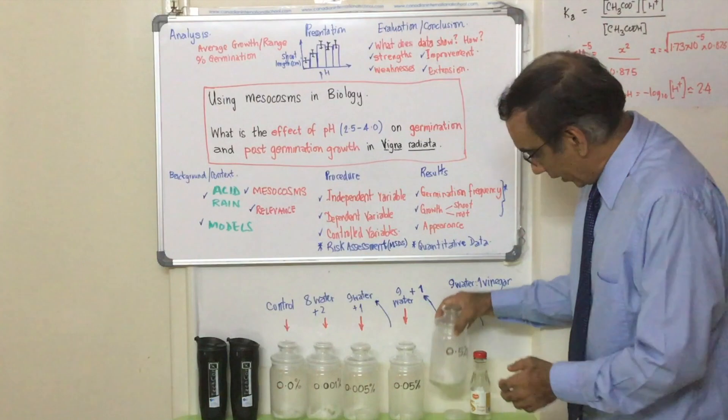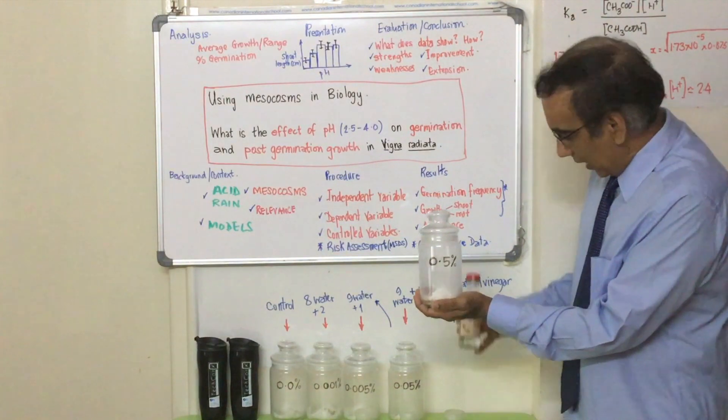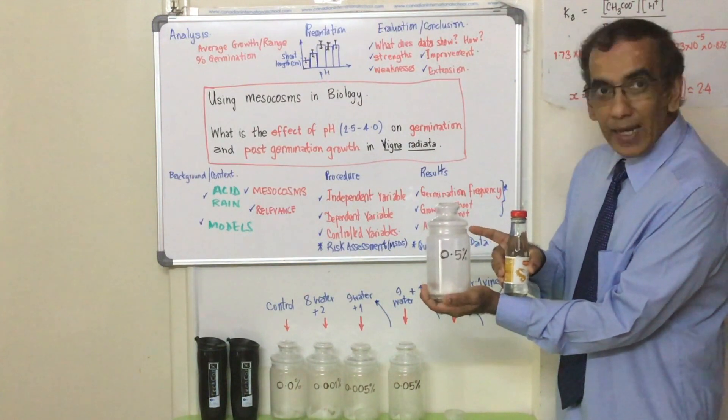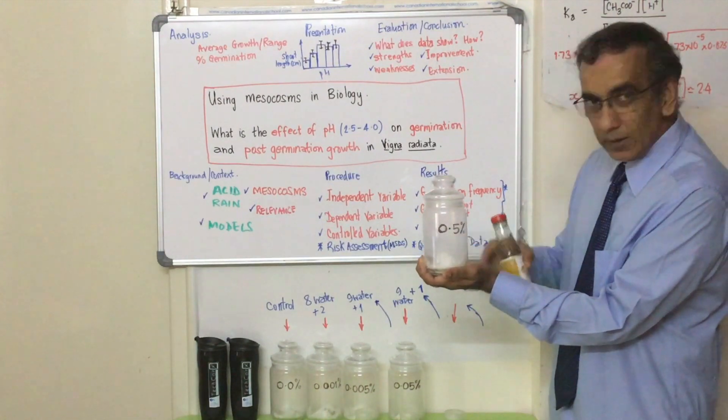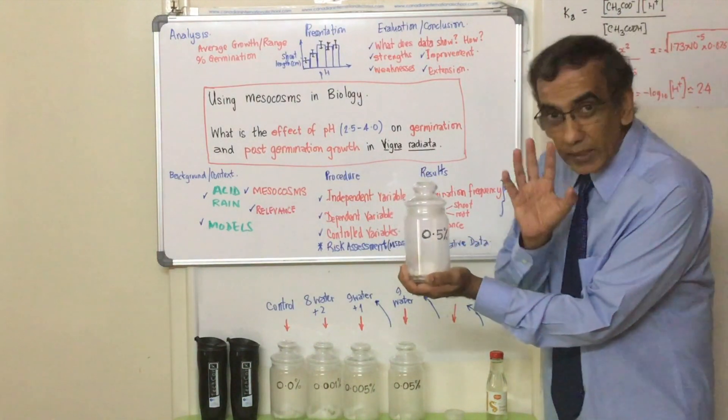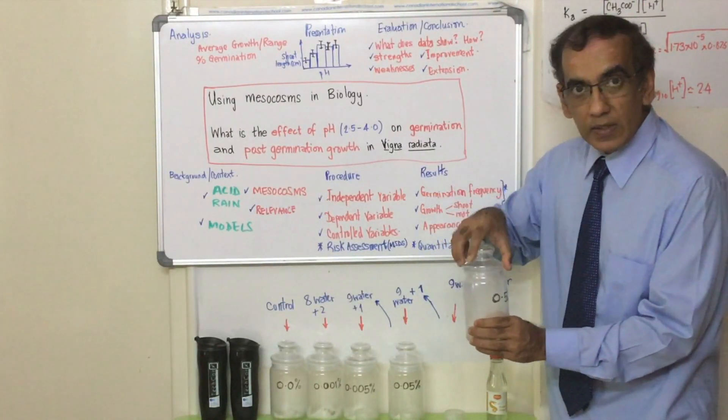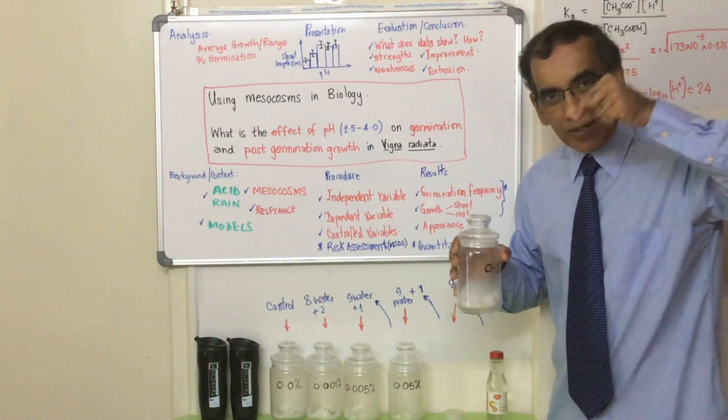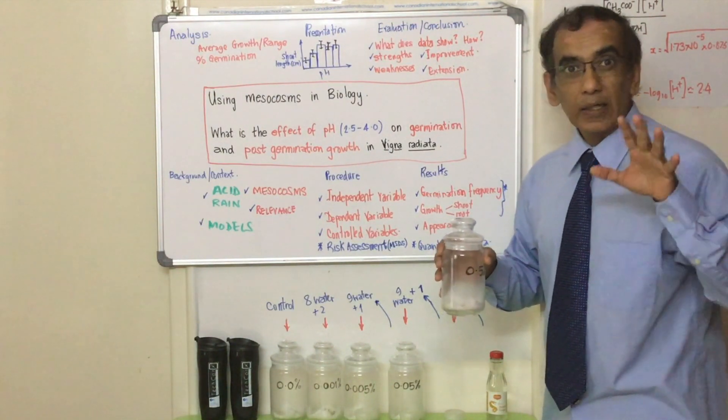So in our first container, we are going to have 0.5% vinegar or acetic acid that's made by taking one milliliter out of this bottle and adding nine milliliters of water to get solution to pour on your paper towel to represent acid rain of this concentration, 0.5%. What pH that corresponds to will be provided for you. And then inside of here we will place six seeds and spread them out equidistantly, equal distances, with the little opening at the side of the seed, the micropyle, facing down.